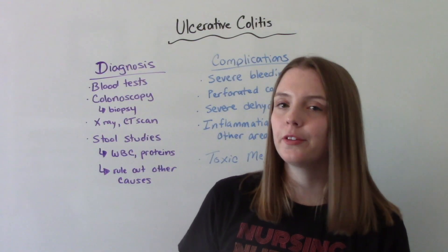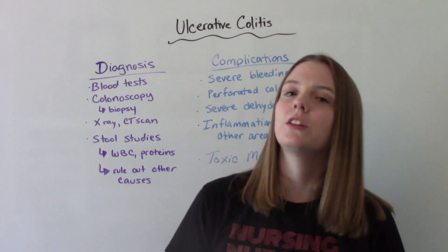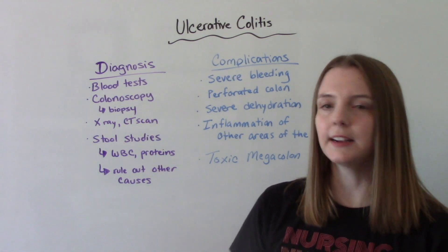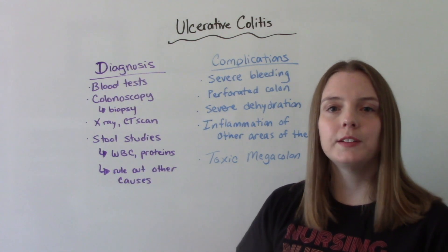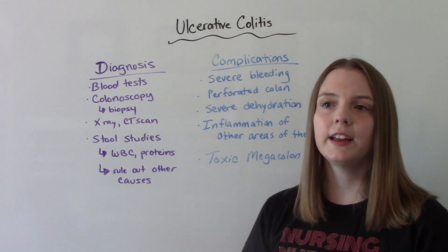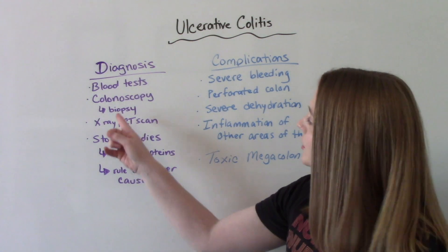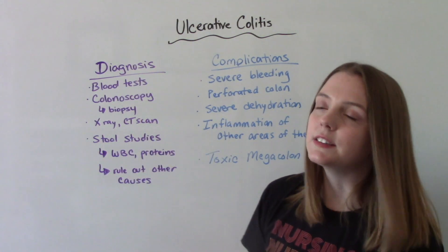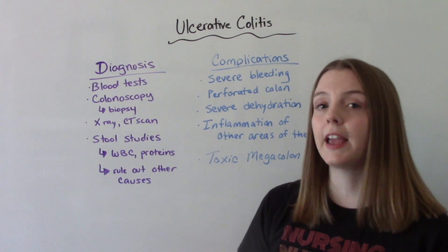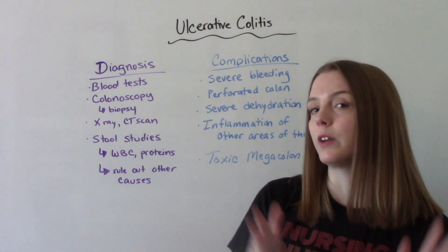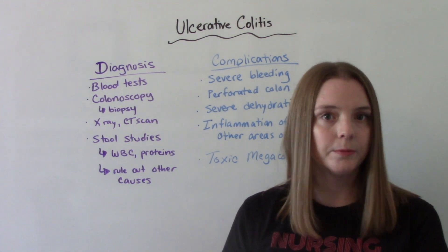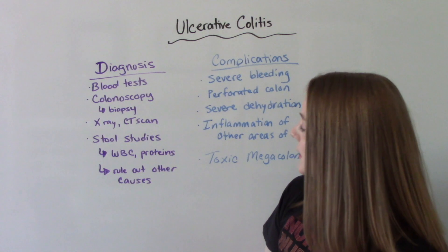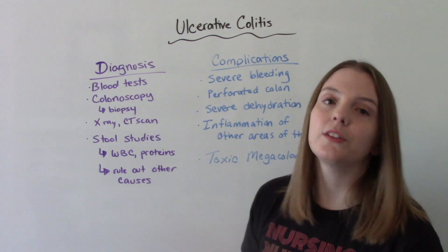To diagnose our patient with ulcerative colitis, we can use blood tests to see that they're anemic. A colonoscopy is our test of choice because not only can they visualize what's going on, they can also take a tissue sample and do a biopsy. X-rays or a CT scan can be helpful, especially to determine the location. Stool studies are also helpful — we're looking for white blood cell count, proteins, and to rule out other causes like infection.